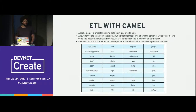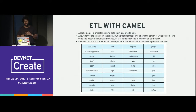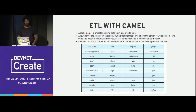Apache Camel is a good technology choice: one, it's open source; two, it has over 200 sources and sinks. A source and sink means you get data from one system and send it to another. Out of the box, it supports AMQP protocol, MQTT — which there are talks about at this conference — and a lot of other protocols, databases, and systems.